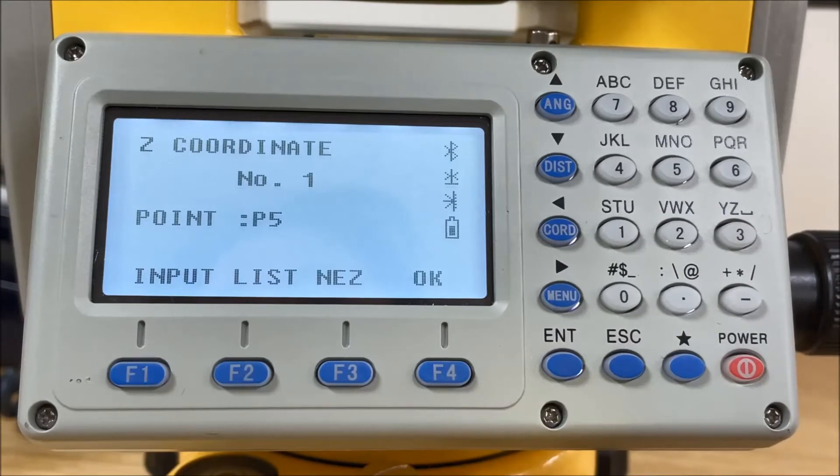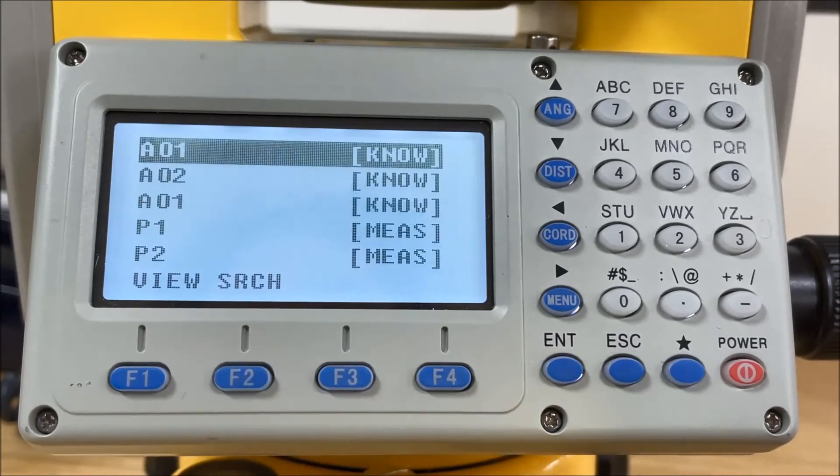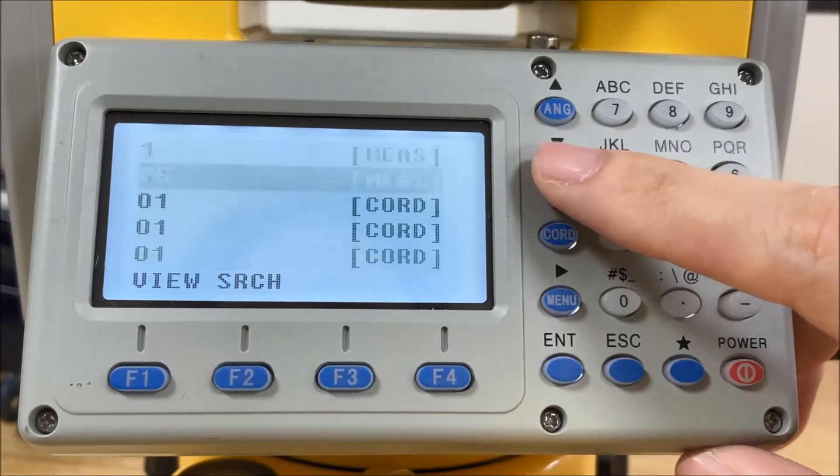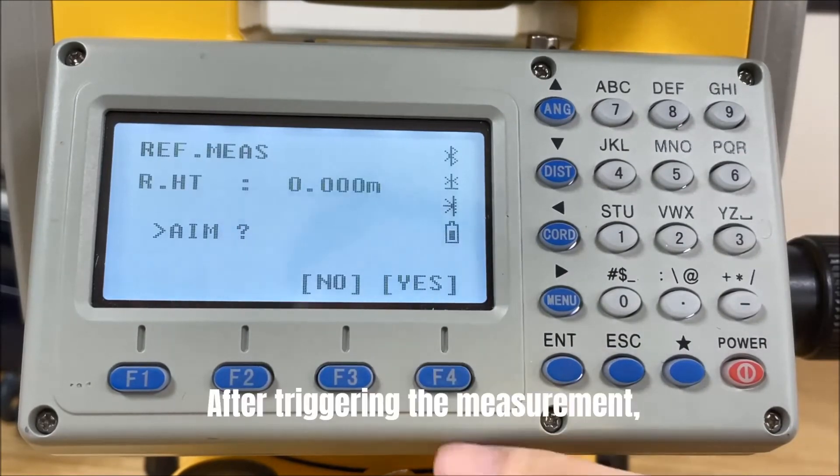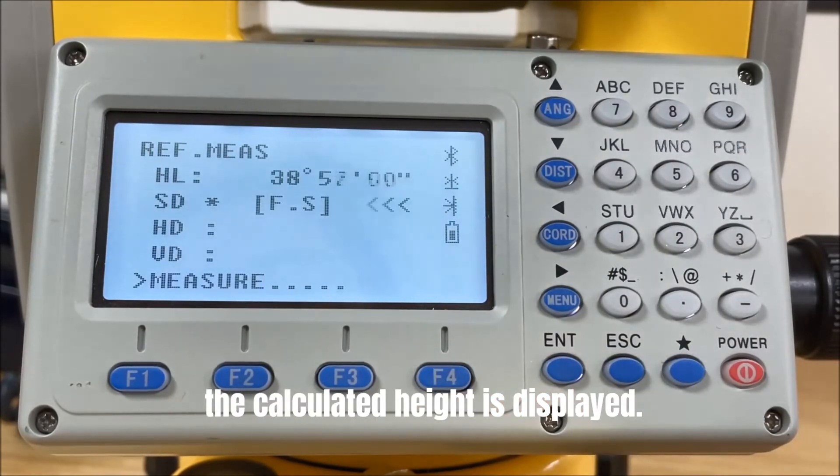Secondly, press Refer measurement. Select known point. After triggering the measurement, the calculated height is displayed.